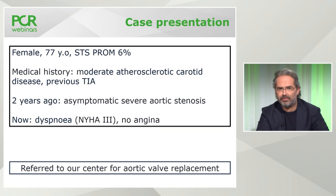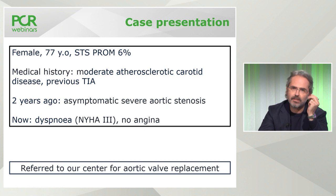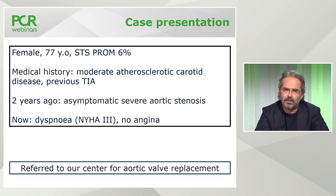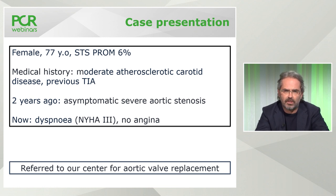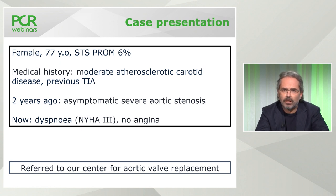Let's start with a case of a patient referred for TAVI with known coronary artery disease. Female, 77 years old, intermediate surgical risk with an STS of 6%. Medical history includes moderate atherosclerotic carotid disease with a previous TIA. Two years previously, the patient received a diagnosis of severe aortic stenosis that was, at this stage, asymptomatic.